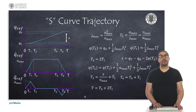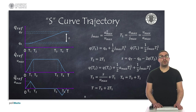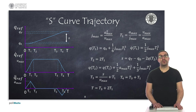An S-curve trajectory includes a triangular profile in the acceleration, which avoids abrupt changes as before. In this case, the slope of the acceleration, also known as jerk, and the time instant t1 can be computed from the maximum velocity and acceleration. Just do the math and you will see that it's easy to obtain the expressions indicated here. This implies that the position and velocity at time instances t1 and t2 are also known once we know the jerk.